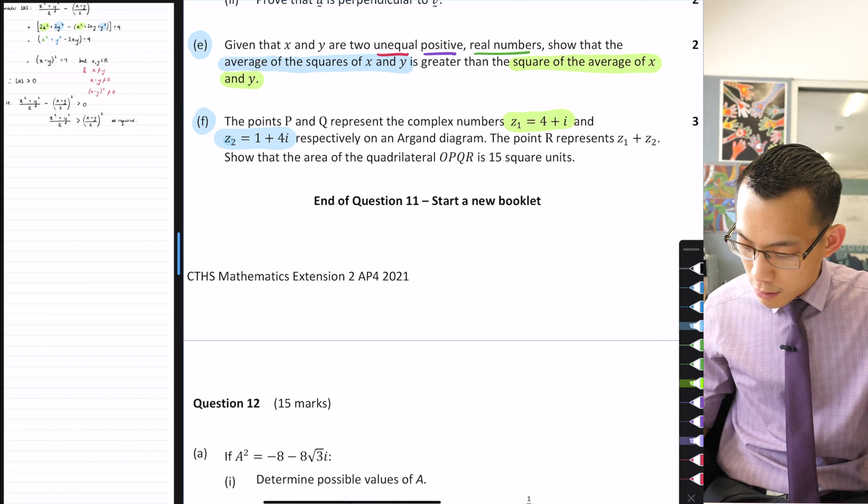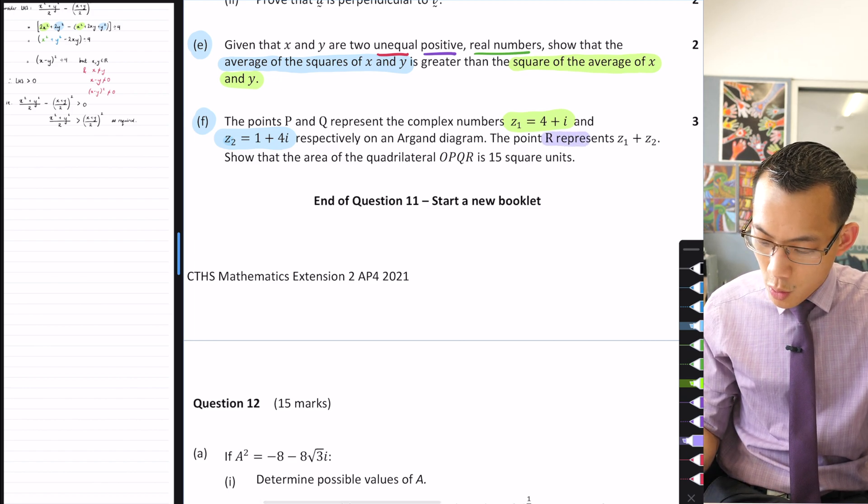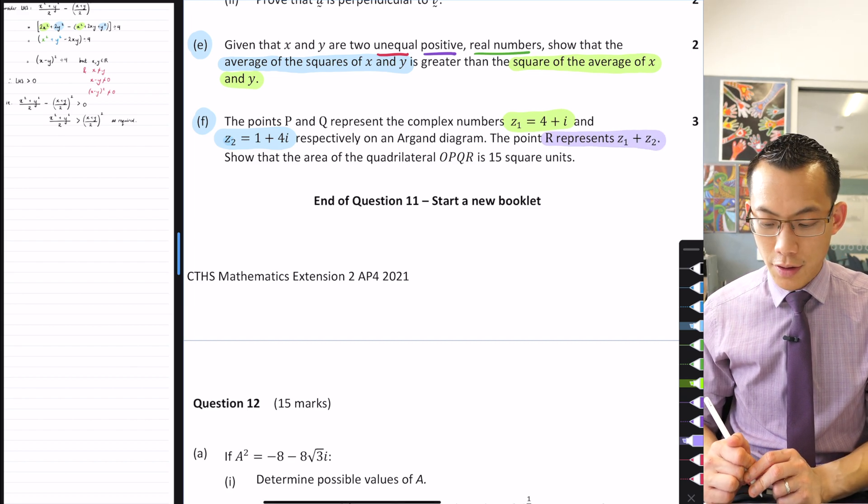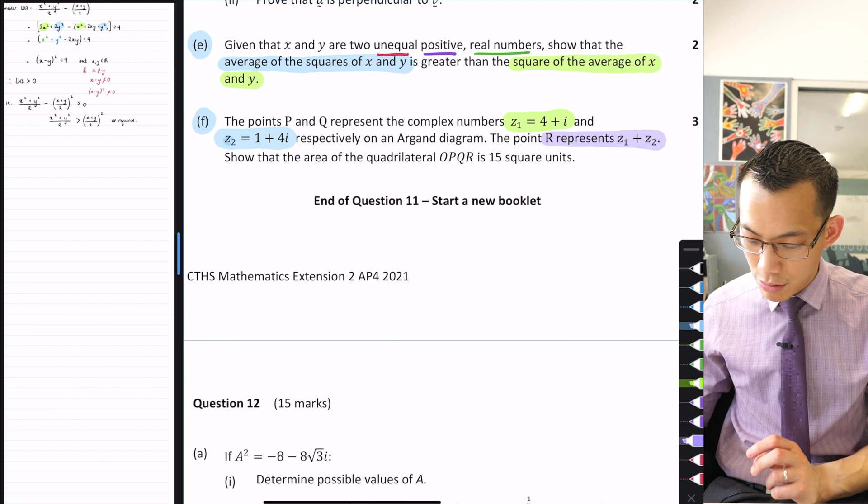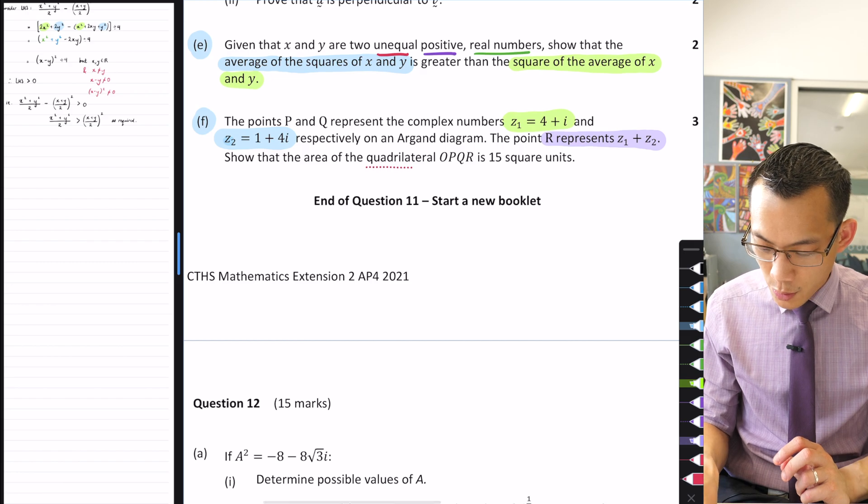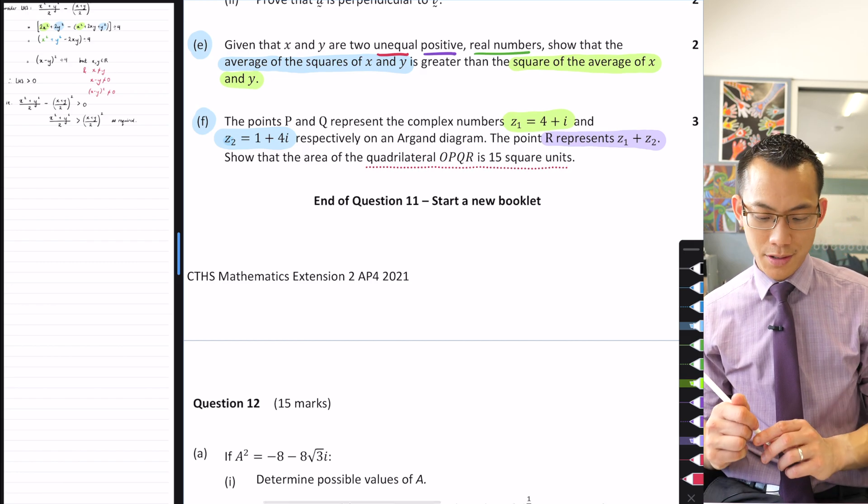The point R represents Z1 plus Z2. So show that the area of the quadrilateral OPQR is going to be 15 square units.